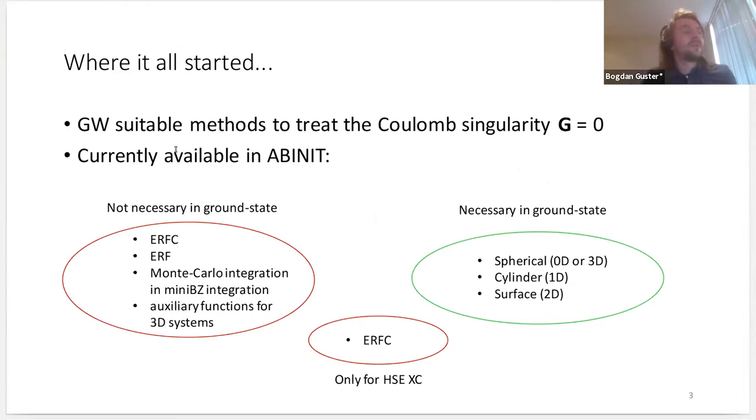Where it all started is that these formulas appeared as a solution to the GW treatment of the Coulomb singularity, many already implemented in ABINIT. Most are not necessary for our ground state part as they deal specifically with the singularity point. Some are only focused on hybrid exchange correlation functionals. We'll focus on methods dealing with spherical, cylindrical, and surface cutoff specific to 0D, 1D, or 2D systems.